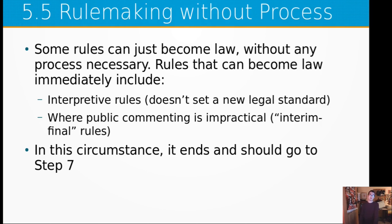Step 5.5 is rulemaking without process. Some rules can just become law without any process or public notification necessary. Rules that can become law immediately include interpretive rules, rules that do not set a new legal standard, or where public commenting is considered impractical. These are called interim final rules, and they jump directly to step seven and likely step eight — adoption.